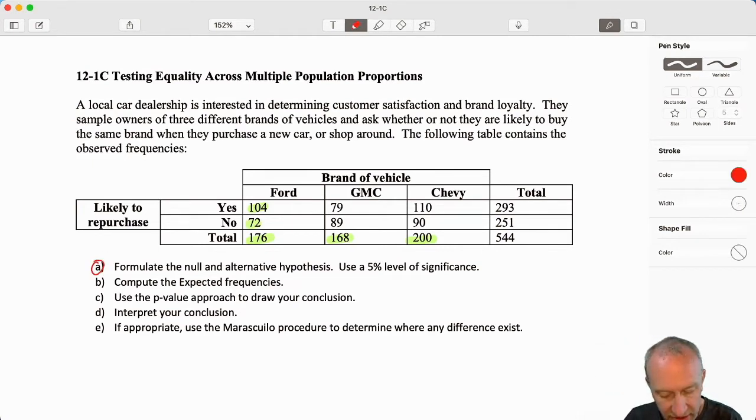So first thing that we're going to do here, look at our null and alternative hypotheses. By now these should come almost second nature. We're testing for the equality across the proportion of Ford owners likely to repurchase, GMC owners and Chevy.